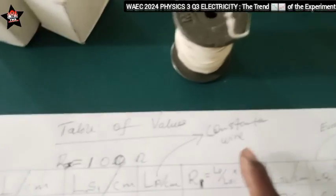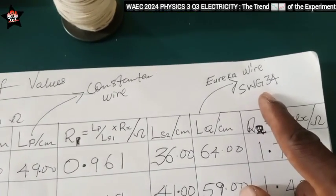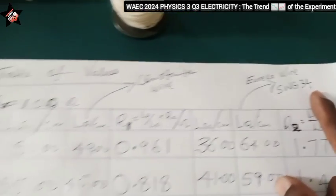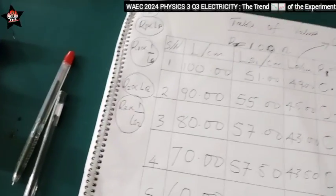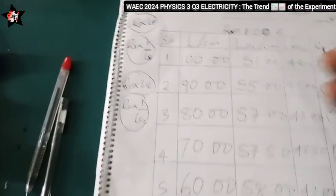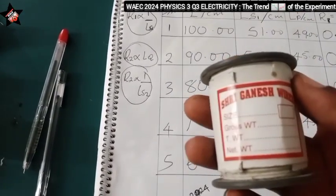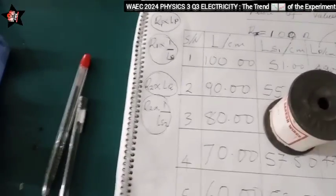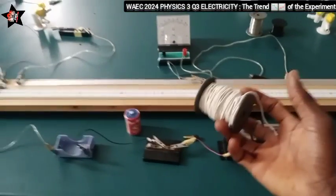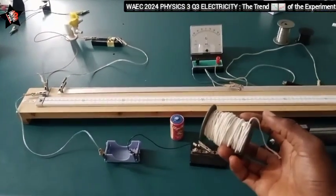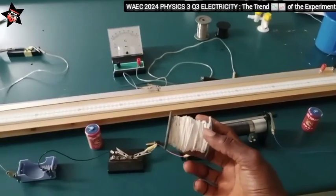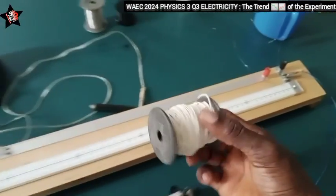I use the constantan wire and I also use the Eureka wire SWG 34. I use this wire. This wire is a no-go area. This is the name of this wire. When I use the wire the galvanometer was deflecting in one direction and it is not supposed to be so. So I removed the wire.